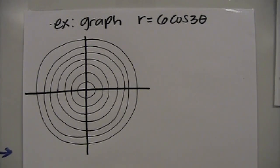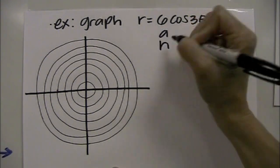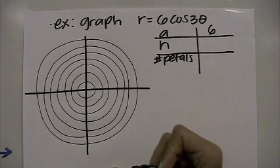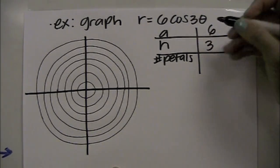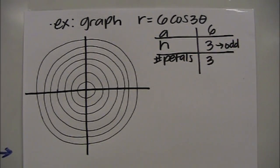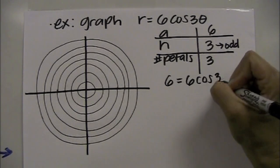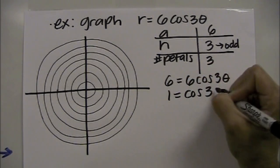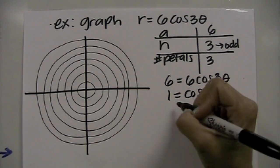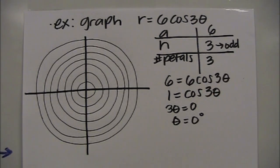The next graph is r equals 6 cosine of 3θ. Identify a, n, and number of petals. A equals 6 and n equals 3. Since n is odd, the number of petals is also 3. To find where the first petal begins, plug a in for r. Dividing by 6 gives 1 equals cosine of 3θ. Cosine of what angle equals 1? That's 0. So set 3θ equal to 0 and divide to get θ equals 0 degrees — the first petal begins at 0 degrees.